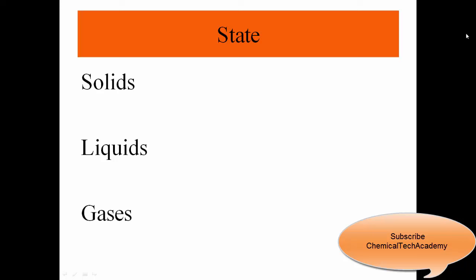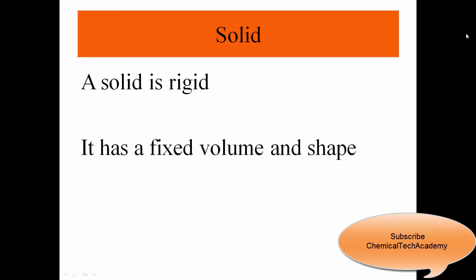Now let's see what are the classifications of matter. We can classify matter according to its state or its physical form and its composition. Matter exists in three states: solids, liquids, and gases. Let's talk about each of them.